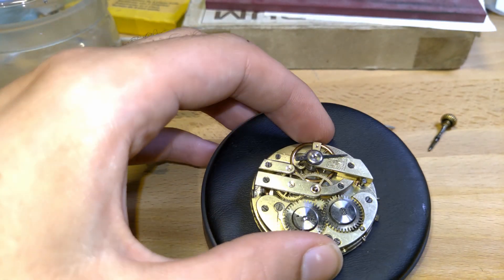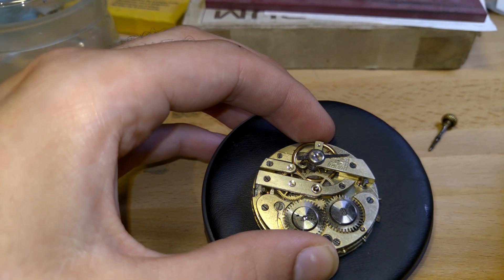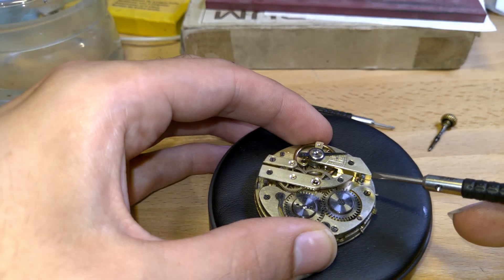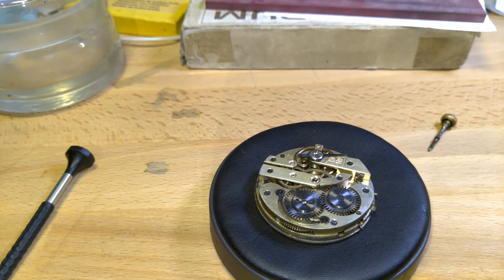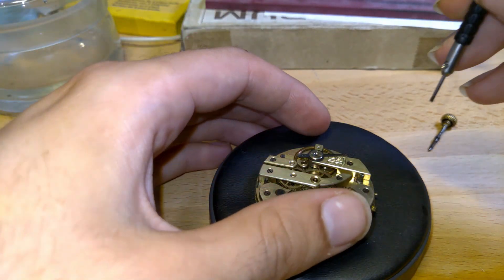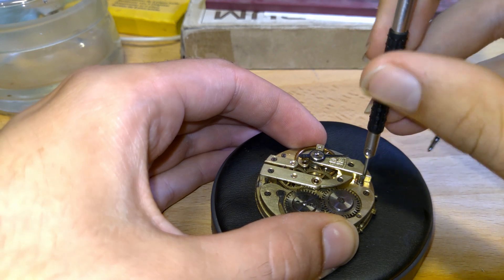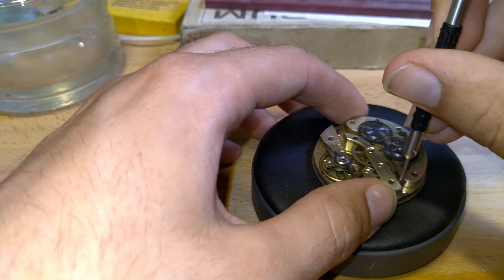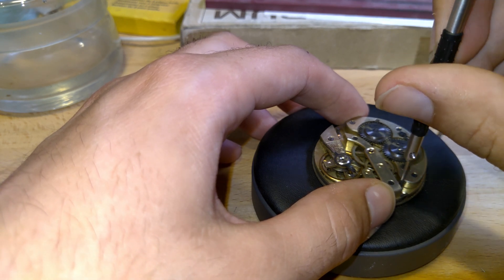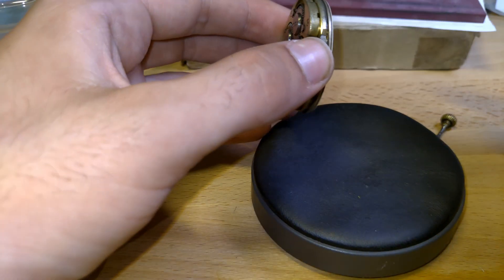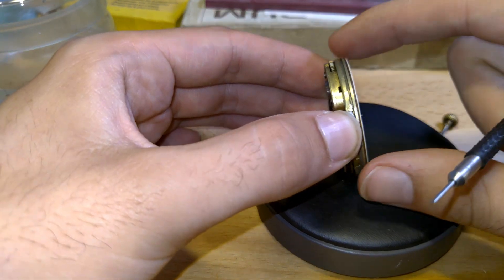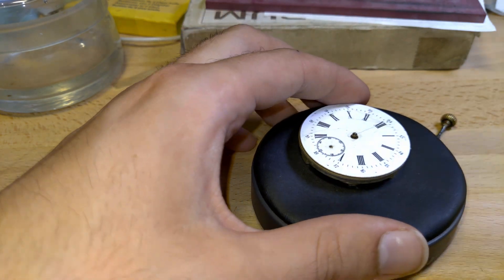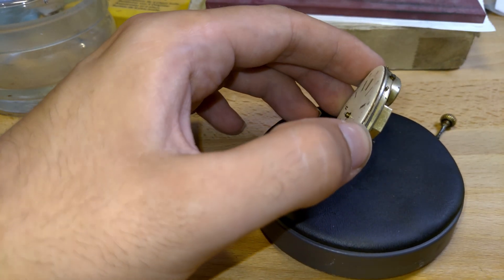Now there are those two sugar bread screws, like we call them. Let's loosen those so we can get the dial off. They are holding the dial feet. This one was already open. Now with some persuasion we should be able to get the dial off.